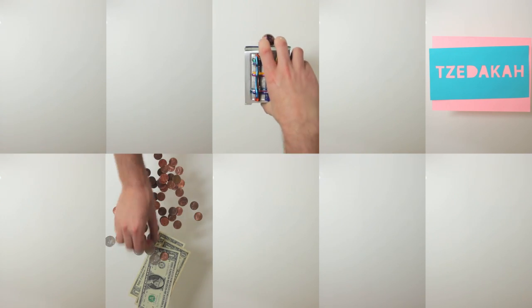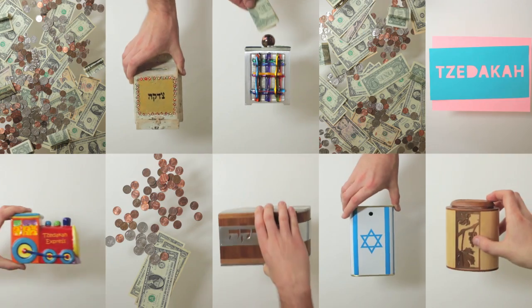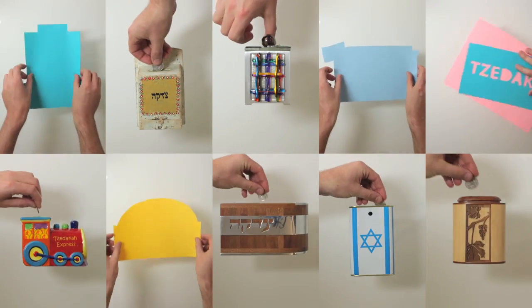For centuries, Jews gave tzedakah by collecting coins in a box. They gave their change to make a change in their communities.